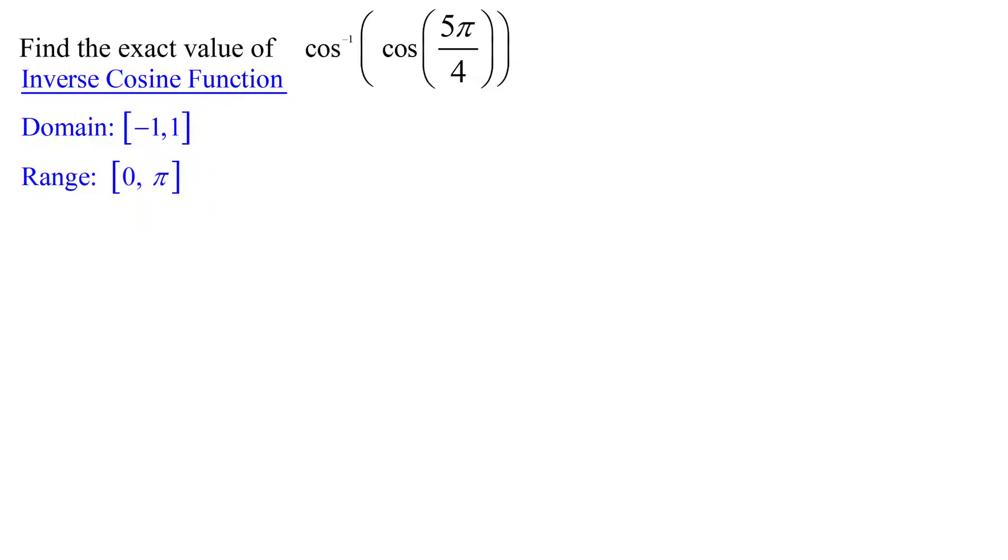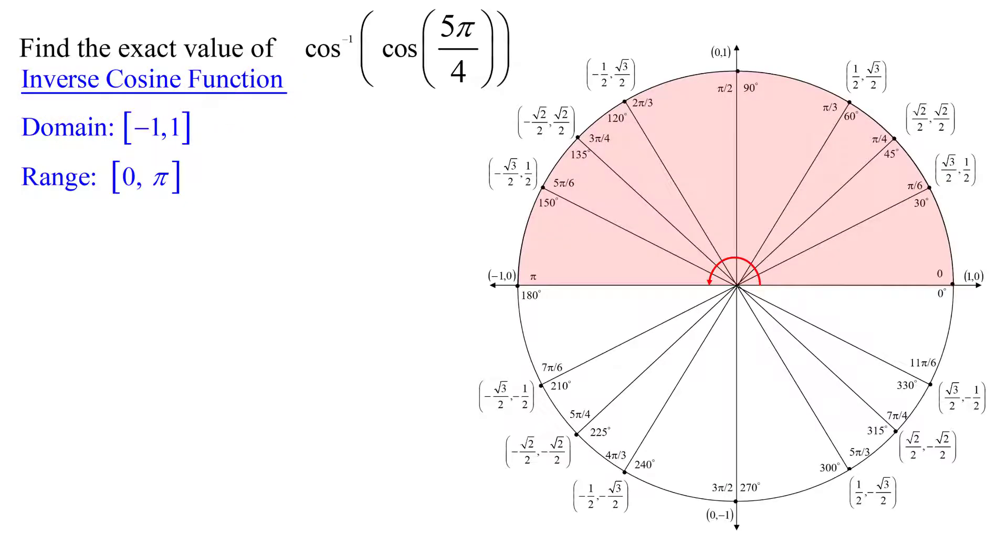So what this means is if I have an inverse cosine function problem, my answer has to lie somewhere in the shaded region on this unit circle, somewhere between 0 and π. Is 5π over 4 in this shaded region? No, it's down here.